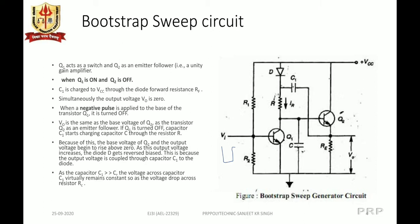Thus, as transistor Q1 is turned OFF, the capacitor C1 starts charging capacitor C through resistor R. As a result of this, both the base voltage of Q2 and the output voltage begin to increase from 0.